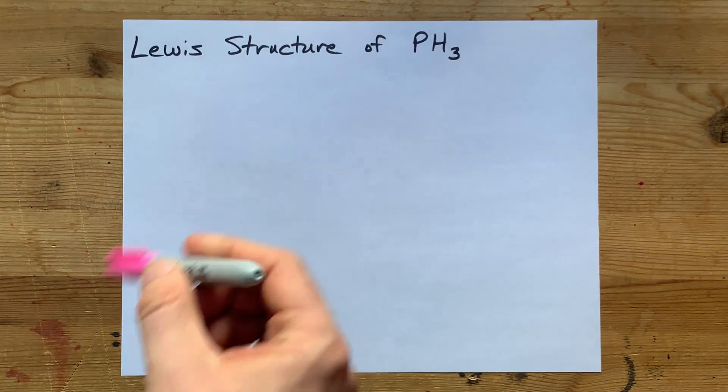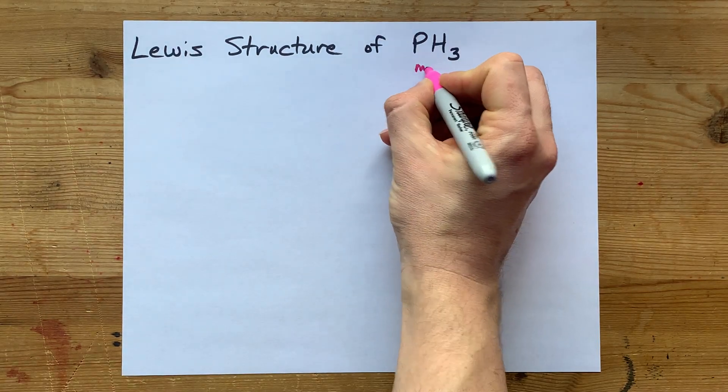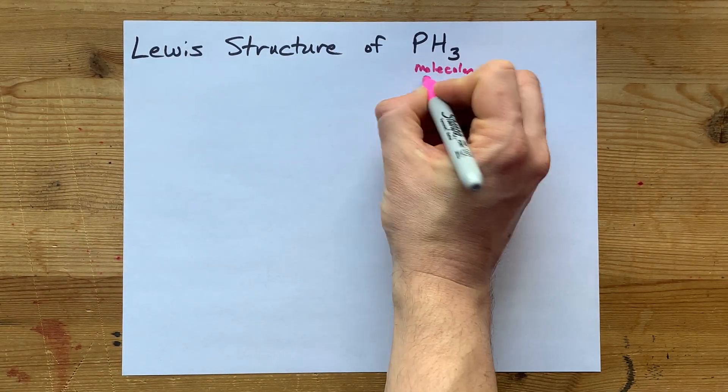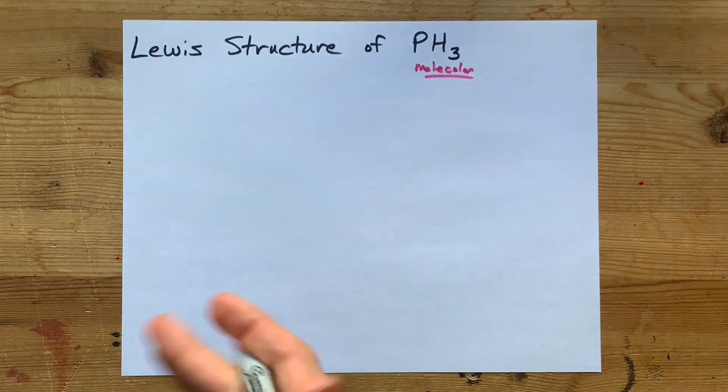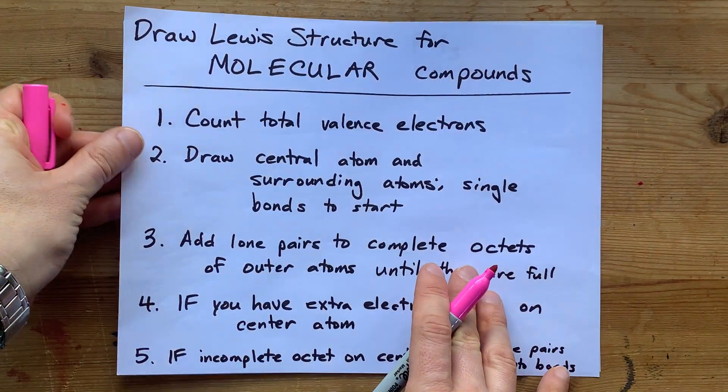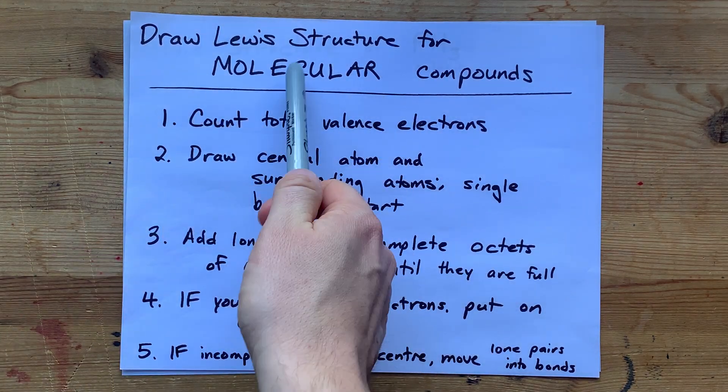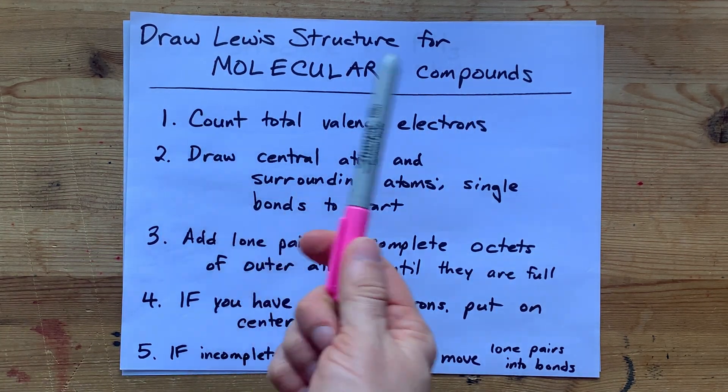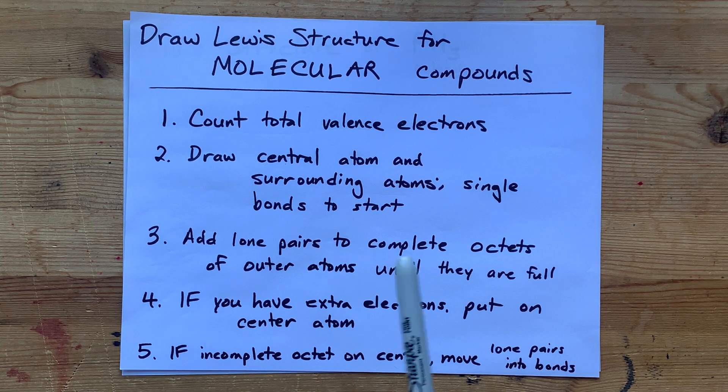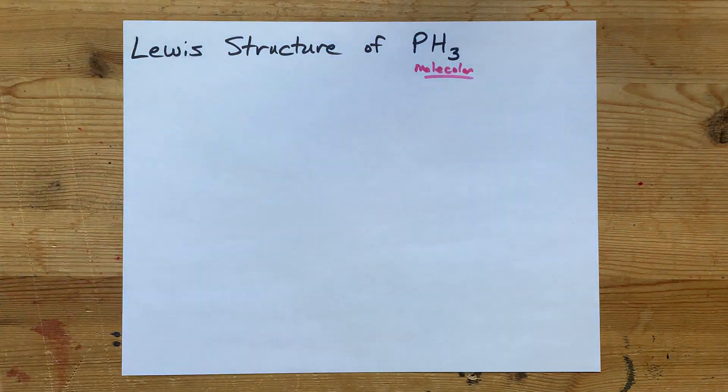So, non-metals combining together make molecular compounds, and that means they're going to share electrons with each other instead of it being a transfer, like for ionic. My method for drawing the Lewis structure of molecular compounds is to, step one, count the total number of valence electrons that you're dealing with.